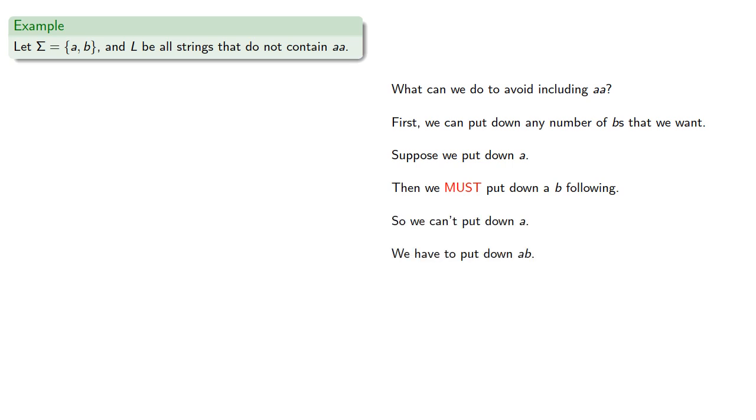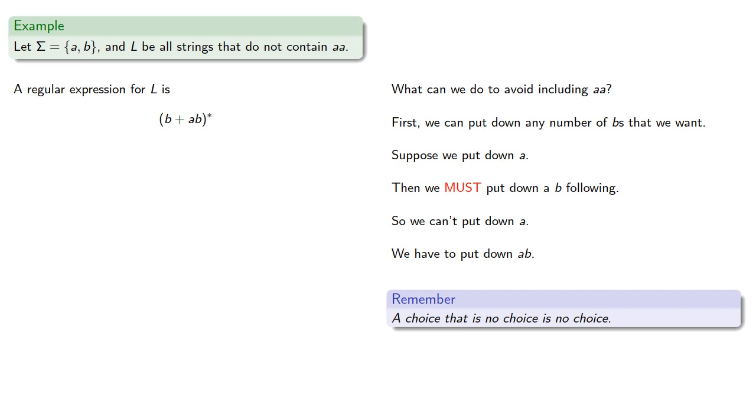So we can't put down A, we have to put down AB. And remember, a choice that is no choice is no choice. So what we can put down is a B or an AB any number of times, and this gives us a regular expression for our language.